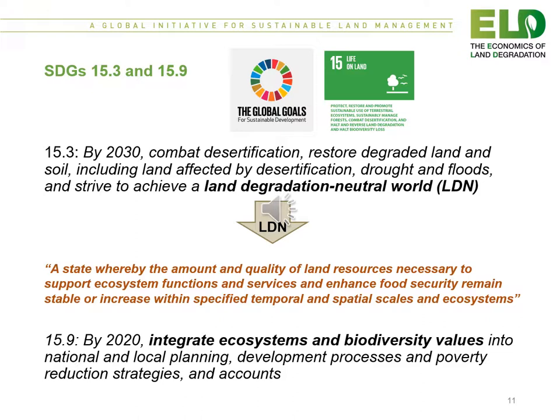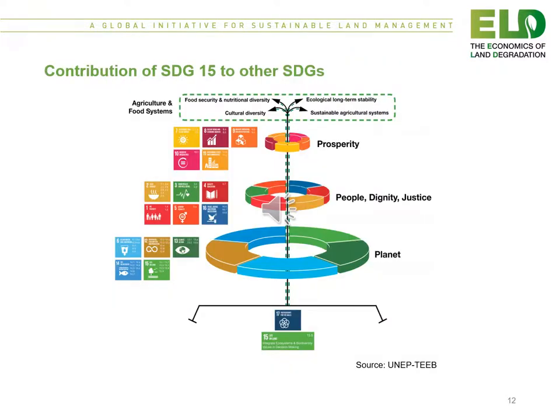SDG 15.9 states that by 2020, integrate ecosystems and biodiversity values into national and local planning, development processes, poverty reduction strategies, and natural capital accounts. This figure shows the contribution of SDG 15 to the other SDGs, recalling that there are important links between the different SDGs.